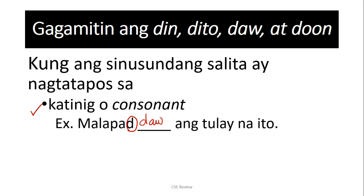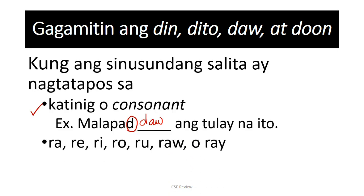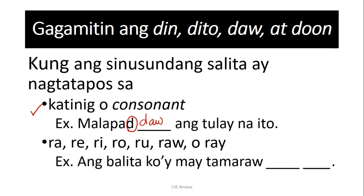So again, you use R if ang sinusundan is a vowel; you use D kung ang sinusundan is a consonant. Now, there is another exception: if the word na sinusundan niya ends with ra, re, ri, ro, ru, raw, or ray — you should also use din. For example: 'Ang balita ko ay may tama raw.' If you think of the rule from before, which says na pag vowel or it ends with a W the answer should be R, in this case — because it ends with the syllable 'raw' — that doesn't apply.